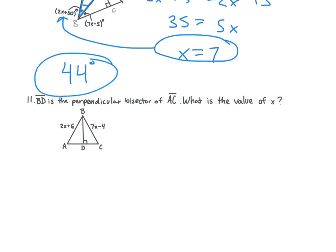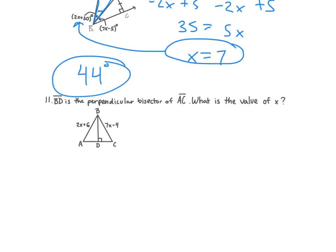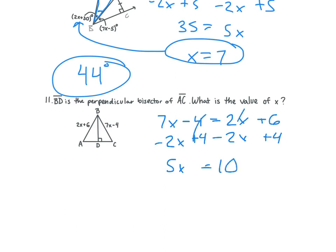Let's look at 11. BD is the perpendicular bisector of AC. What is the value of X? We set up 7X minus 4 is equal to 2X plus 6. We solve for X: we get 5X is equal to 10, so X is equal to 2. All it's asking us for is the value of X, so we leave it as X equals 2.